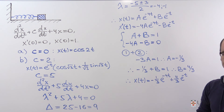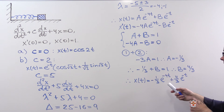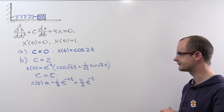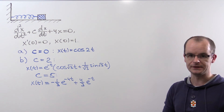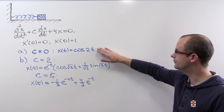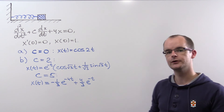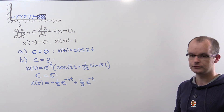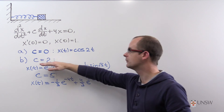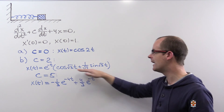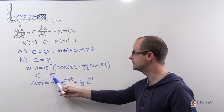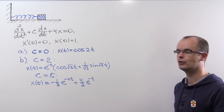This is the solution for c equals 5. There are no cosine or sine terms here, so the block does not oscillate. Comparing the three solutions: in the ideal case with no friction, we have oscillations with fixed amplitude; when friction is present with c equals 2, we still have oscillations but with damped amplitude; when the coefficient of friction is larger (c equals 5), there are no oscillations at all.